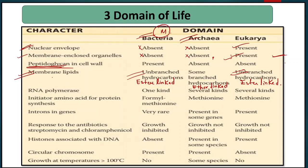Next character: RNA polymerase. In Eubacteria, there is one type of RNA polymerase present. In Archaebacteria, there are also several kinds. In Eukaryotes, there are different types of RNA polymerase — majorly RNA polymerase I, II, and III.